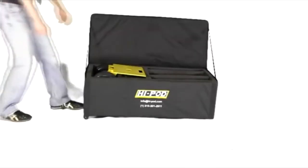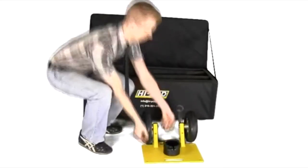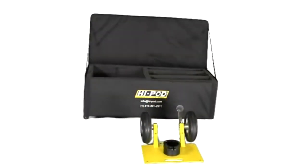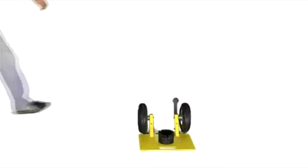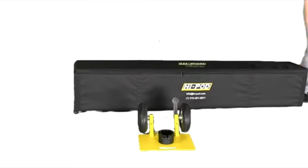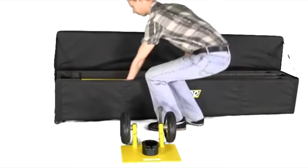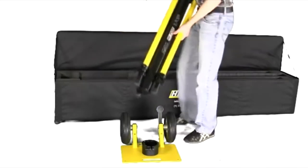To begin setting up your unit, you will start with the accessory case. Find the yellow base plate with wheels inside and place it on the ground. Now retrieve your tube and base case. From inside, grab the attached tube and base and place them into the plate on the ground.